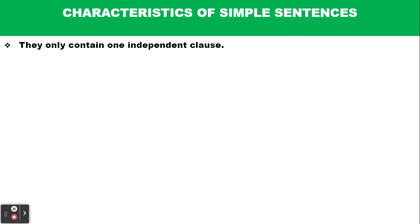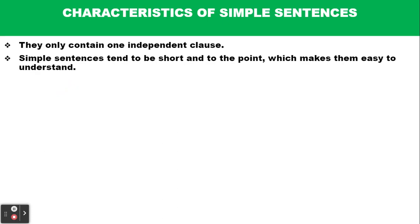Let's look at the characteristics of simple sentences. The first characteristic is that they contain one independent clause. Secondly, simple sentences tend to be short and to the point, which makes them easy to understand.